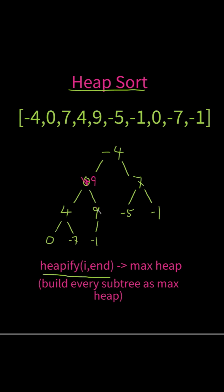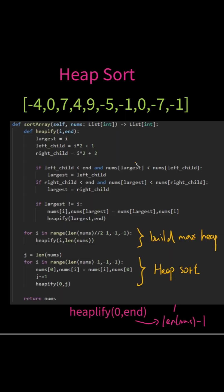And here's the whole Python code. The first for loop is for building the max heap. The second for loop is for the heap sort.